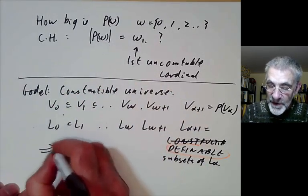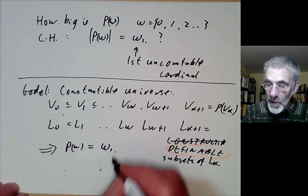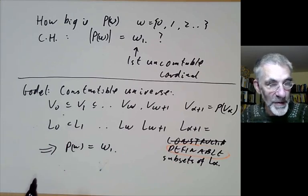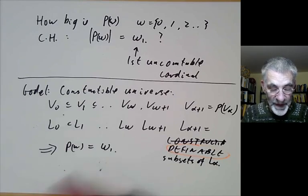So in the constructible universe the power set of omega is actually equal to omega one and in fact even the generalized continuum hypothesis is true. He showed something similar for even for power sets of uncountable sets.